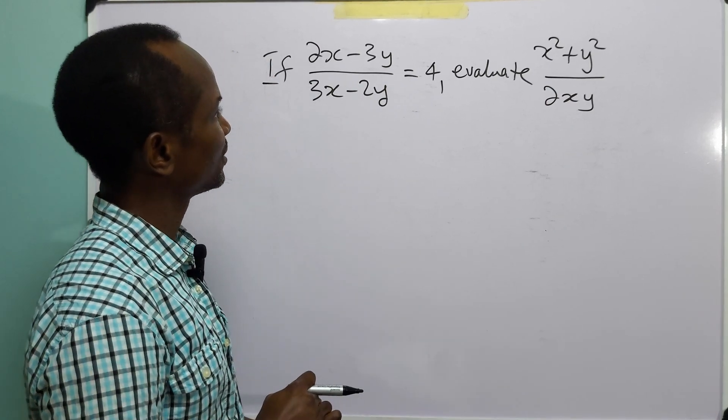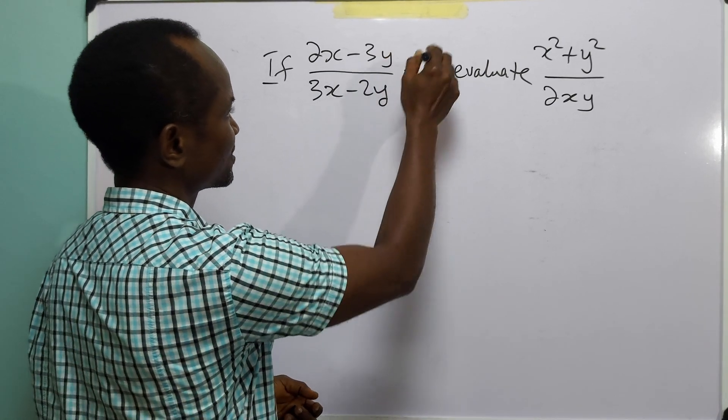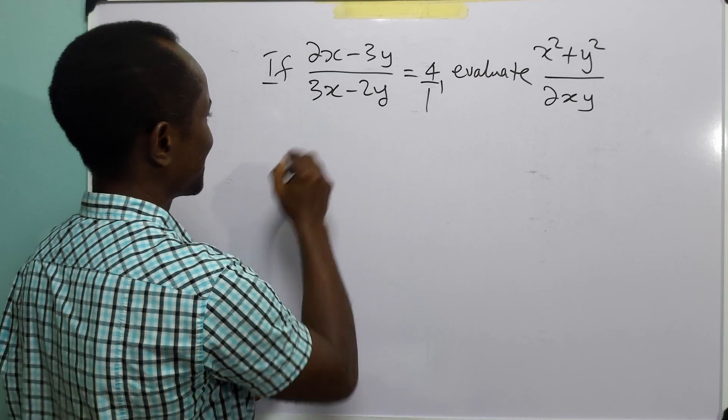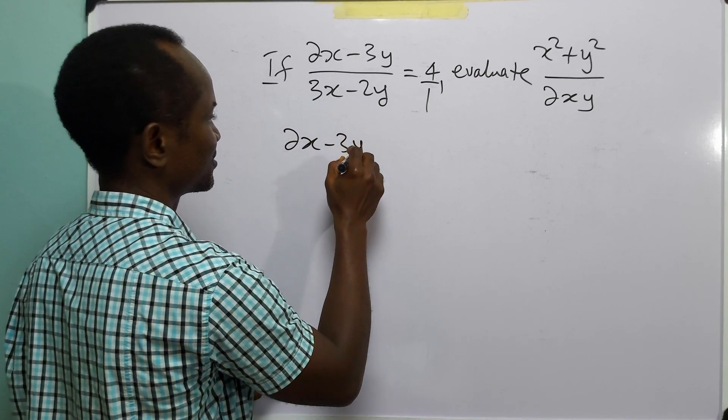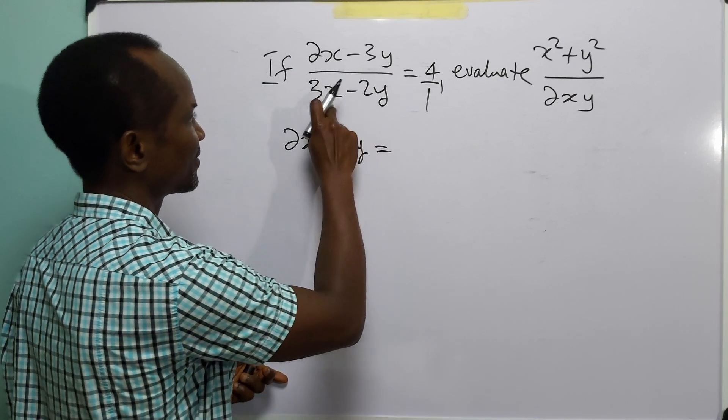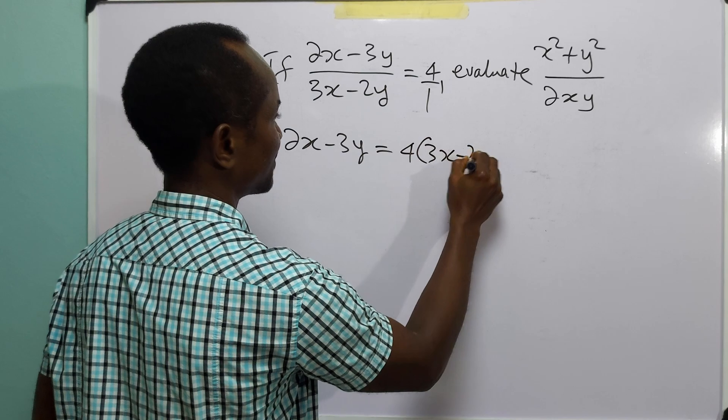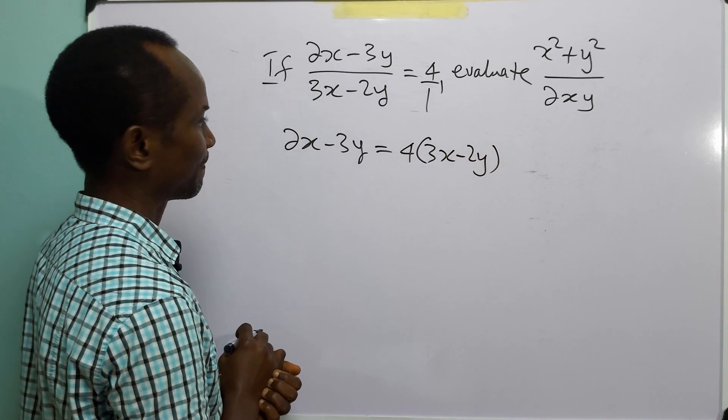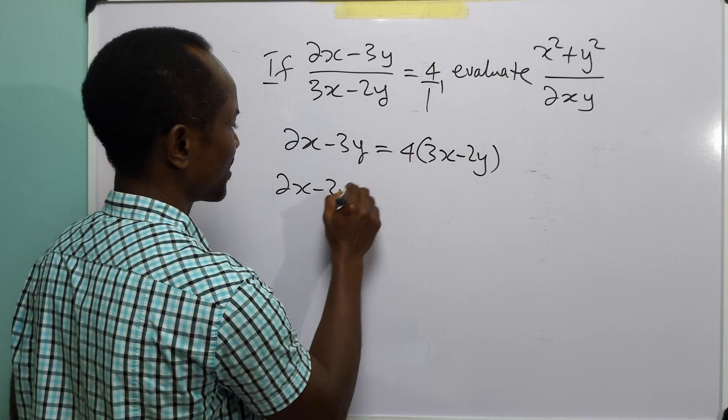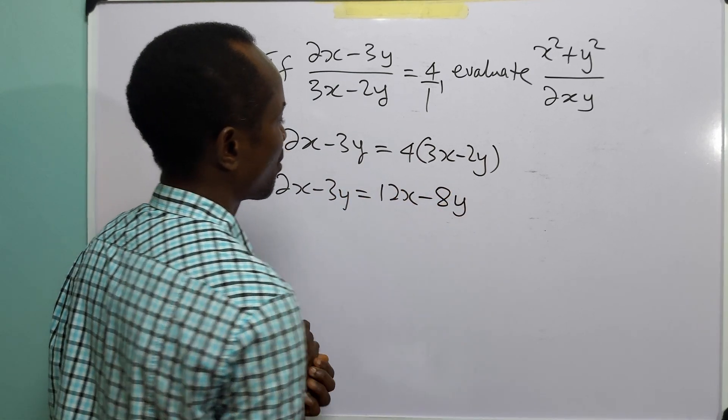So first of all, let us reorganize this. First, we cross multiply. So we have 2x minus 3y multiplied by 1, which is equal to 3x minus 2y multiplied by 4. That is 4 into 3x minus 2y. Opening this bracket, we have that 2x minus 3y is equal to 12x minus 8y.